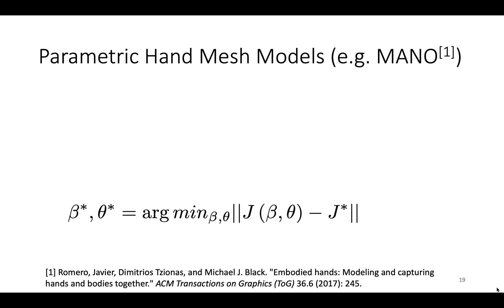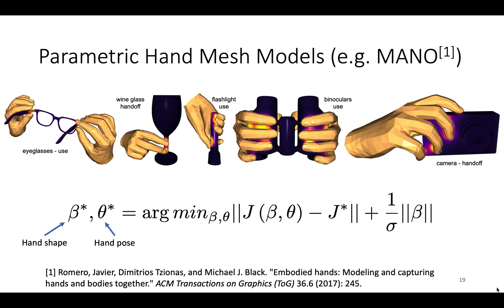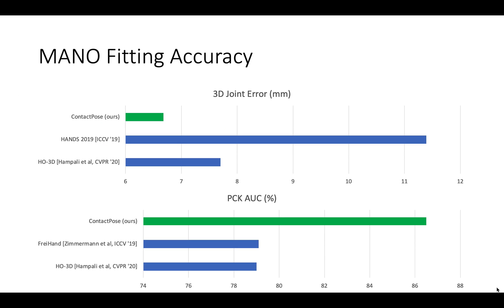Since we are interested in hand object contact, we estimated embodied hand meshes by fitting MANO models to the 3D joints by optimizing the hand shape, hand pose, and some regularization on the hand shape. Here are some examples. The high accuracy of this fitting process indicates that our 3D joint annotations are in more physically plausible configurations than other datasets.